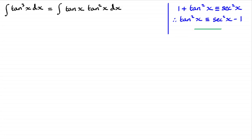And what I can do now is expand the bracket. Expanding the bracket gives us this integral: the integral of tan x times sec squared x minus tan x, integrated all with respect to x. So we've got two terms here to integrate.